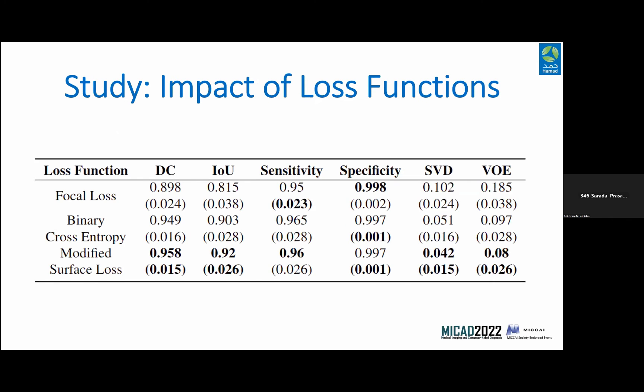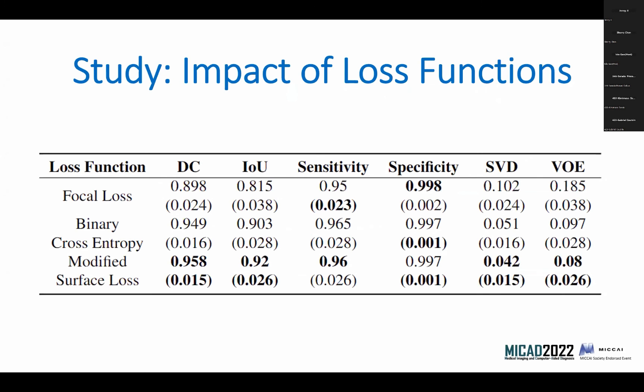The first study we conducted was on loss functions, to understand what kind of loss function maximizes network performance for liver CT segmentation. We tried two class accuracy-based loss functions: focal loss and binary cross-entropy. Among these, binary cross-entropy resulted in better performance. However, our proposed modified surface loss performed the best because it combines an area-based loss function — dice loss — with a boundary-based loss function — boundary loss. The area-based component ensures the model learns the area distribution of the ground truth, while the boundary loss fine-tunes the boundary of the segmentation mask by capturing the discrepancy between the predicted mask boundary and the ground truth.